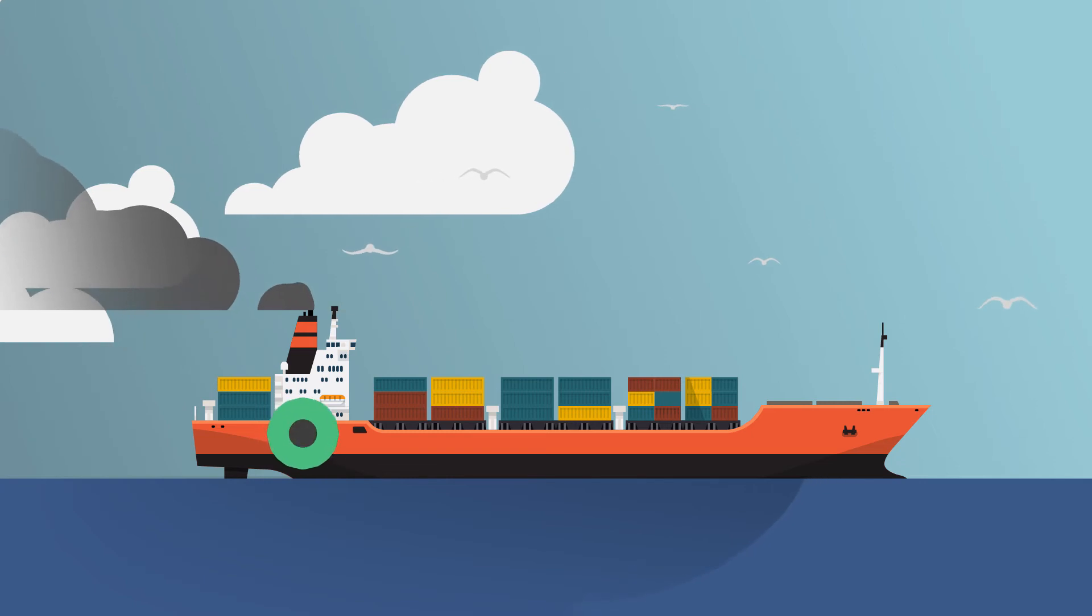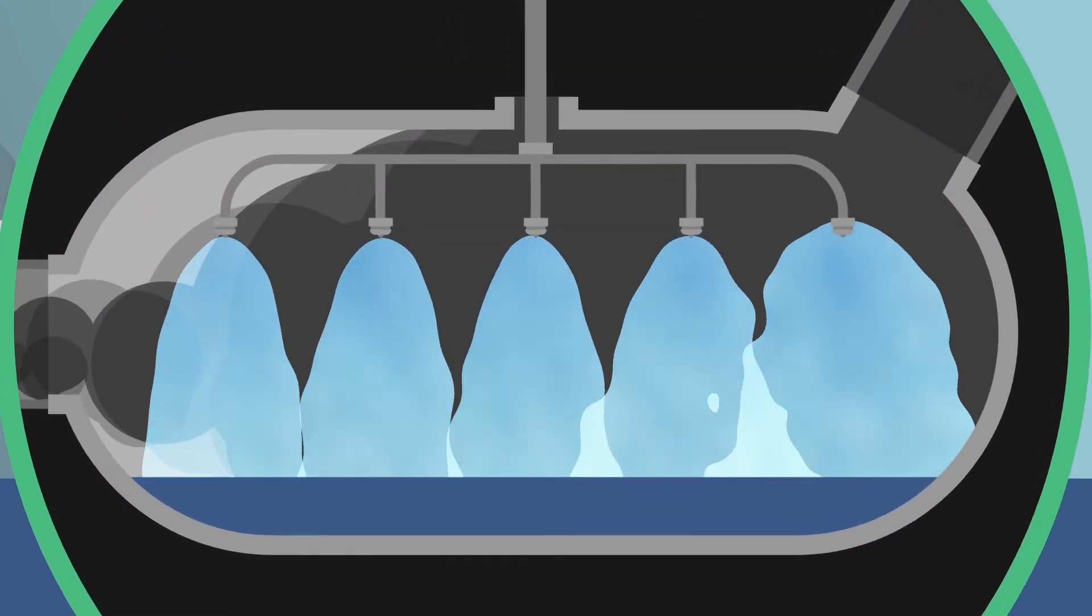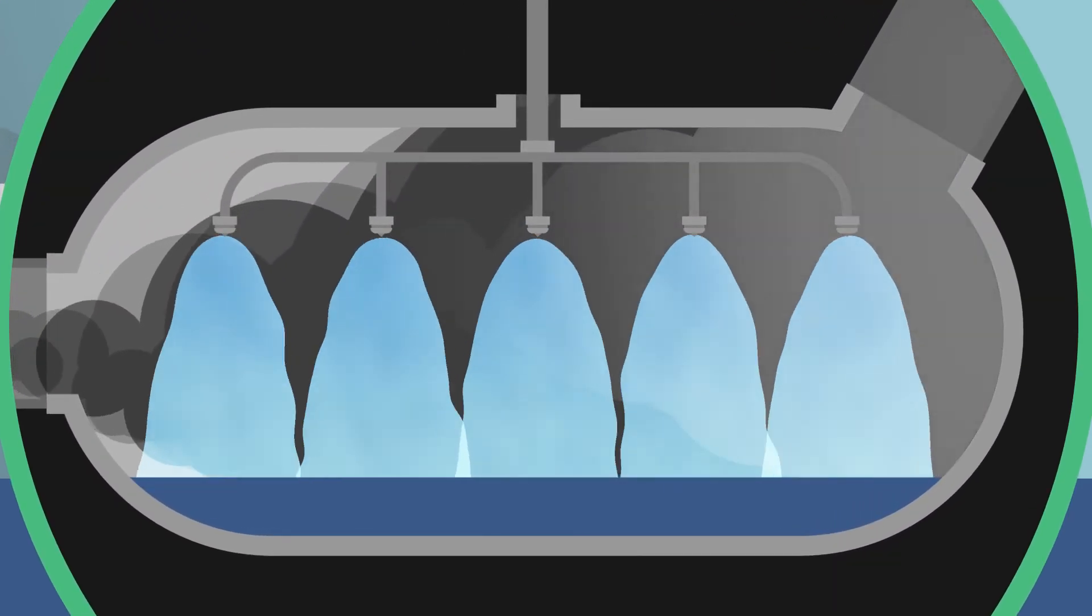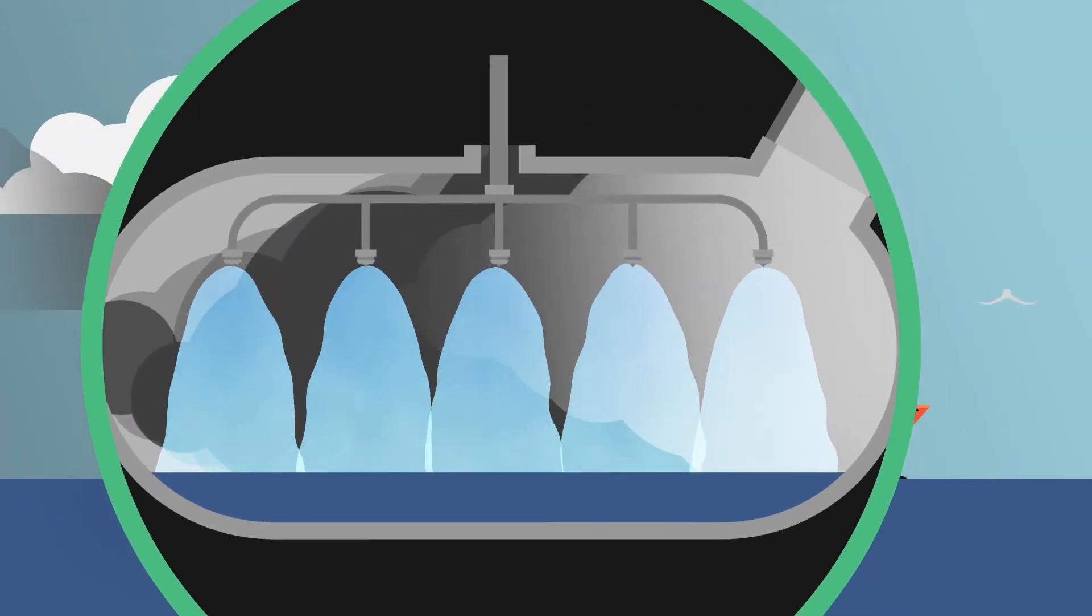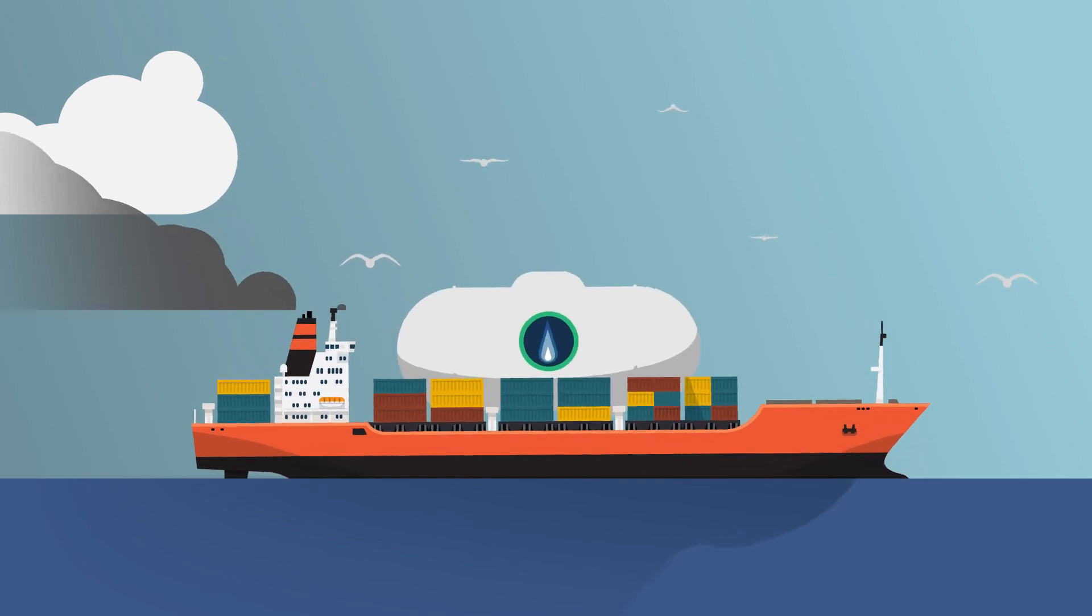The second is to install scrubbers. These things basically wash the exhaust from the engine and remove enough bad stuff to continue using bunker fuel. The third option would be to convert their ships to use liquid natural gas instead.